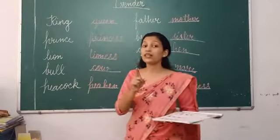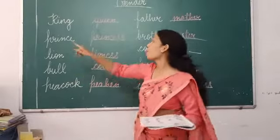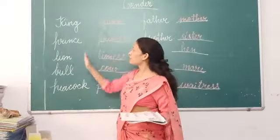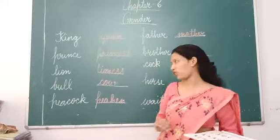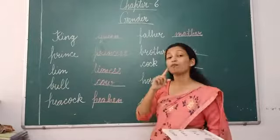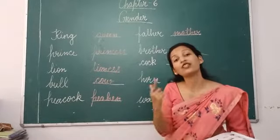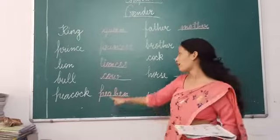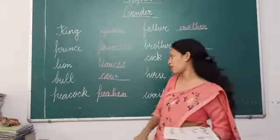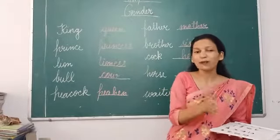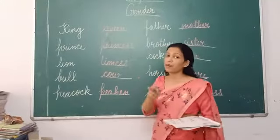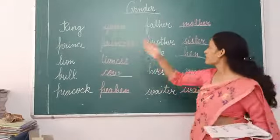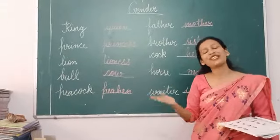Prince is a masculine gender and princess is a feminine gender. Lion is male so it is masculine gender, but lioness is female so it is feminine gender. Bull is male so it is masculine gender. Cow is female so it is feminine gender. Peacock is male so it is masculine gender. Father is male so it is masculine gender, but mother is female so it is feminine gender.